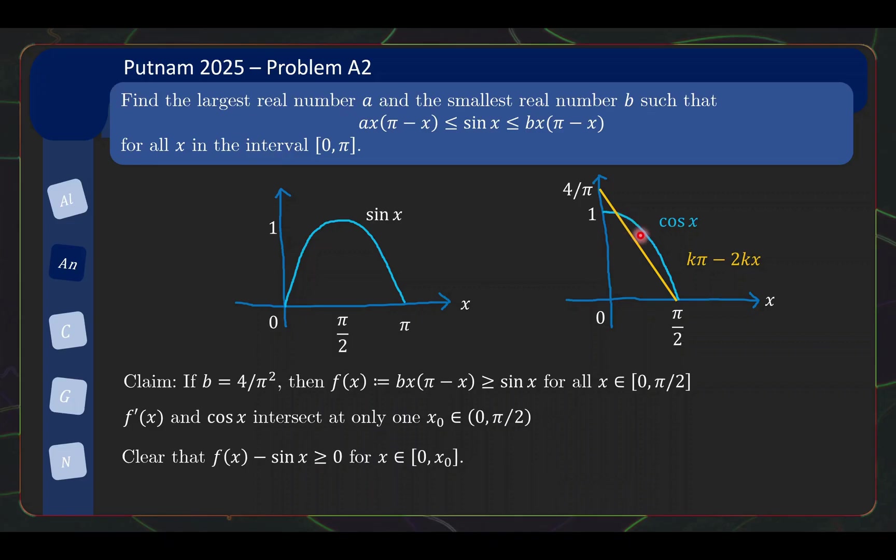Now, what happens after x₀? You start to get negative accumulated, or rather the relative area becomes negatively accumulated. So you'll start to close the gap between your f(x) and sin x. But the worst case scenario happens when you accumulated all the negative area all the way up to π/2. So for all x between x₀ to π/2, the difference in area accumulated is ≥, at the end where you accumulated fully the negative area. But this, I mean that's the whole point of setting b equals to 4/π², this thing by construction is equal to 0.